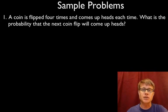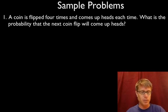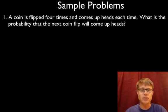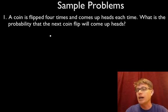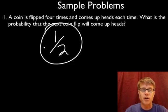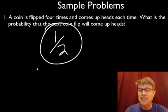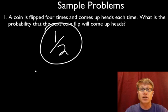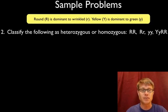A coin is flipped four times and comes up heads each time. What is the probability that the next coin flip will come up heads? Everything that's happened in the past cannot influence anything in the future. So it's a one-half probability that you'll get heads. In other words, you could have ten kids and they could all be boys — what are the odds the next one is a girl? It's still a one in two probability.